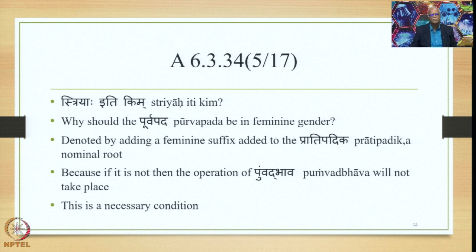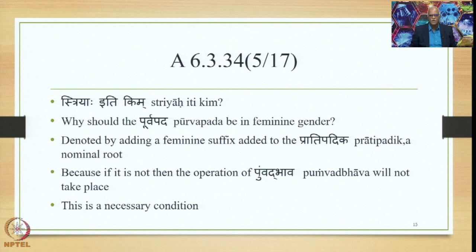We have already seen two examples: Chitragu as well as Rupavadbhariya. Now let us proceed in understanding the Pratyudaharanas, which bring home the point that each and every word in the sutra is extremely crucial, because it helps avoid under-generation as well as over-generation which would have been caused in the absence of that particular word — the Uddishta Prashna Shabda.